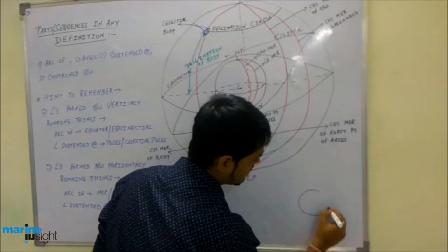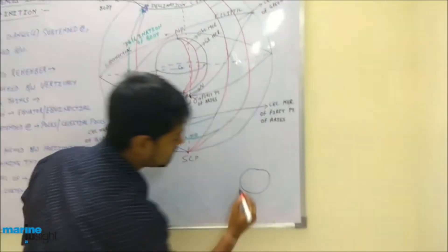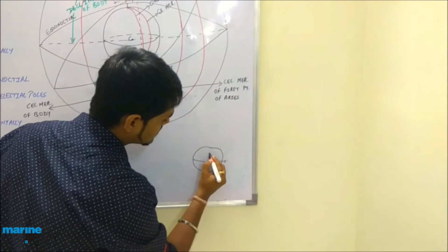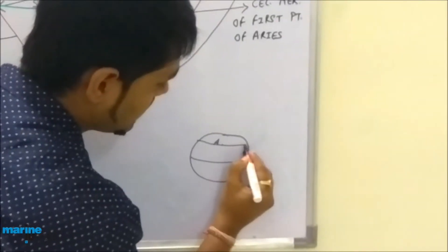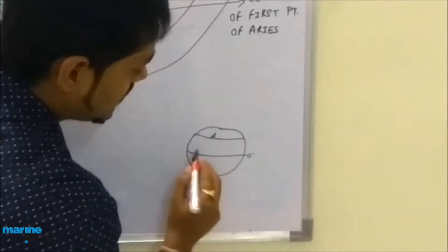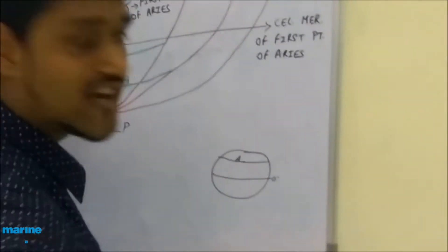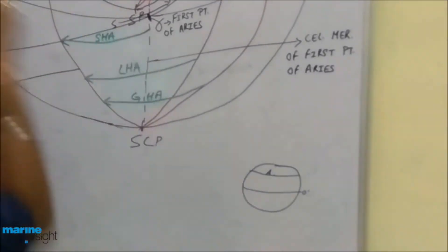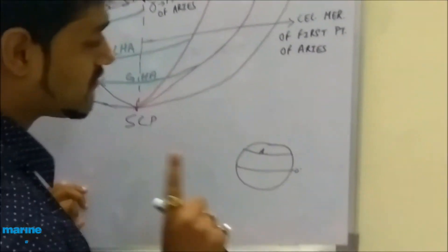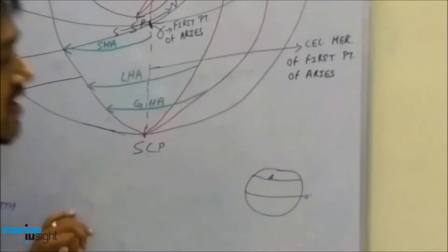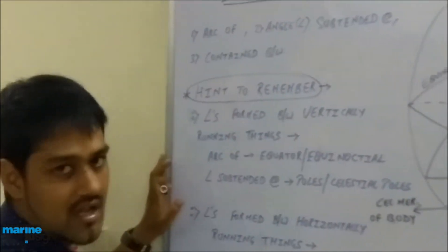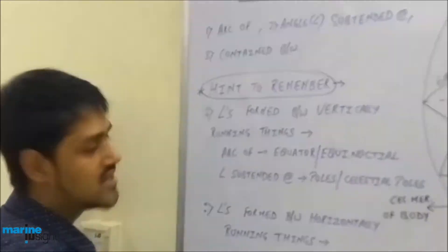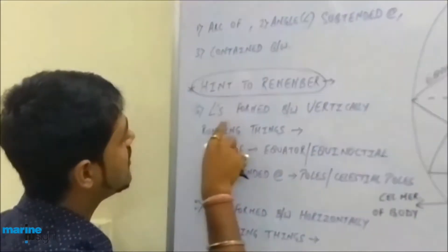Suppose this is the earth and this obviously is the equator. Suppose here is a place called A and this is the parallel of latitude passing through it. When we define latitude using this form, obviously the first thing we need is 'arc.' Going back to the hints to remember column, you have to check one of two things first.